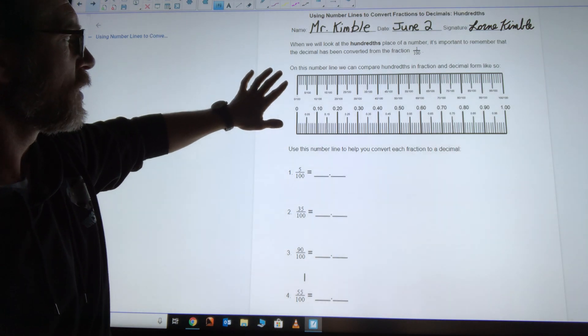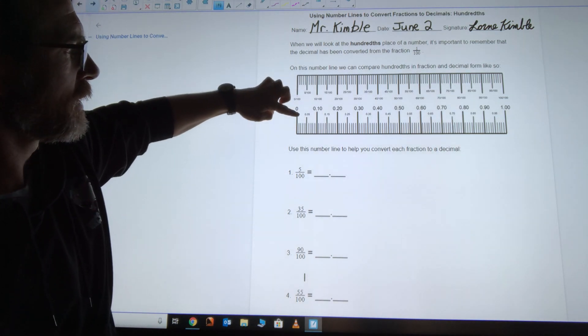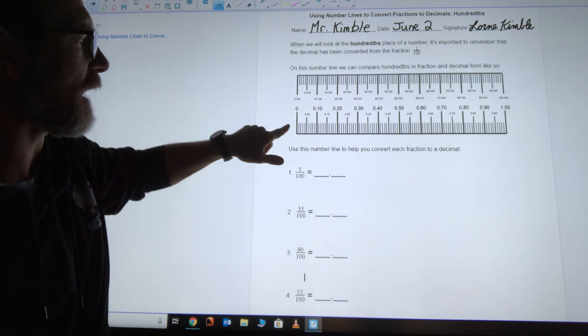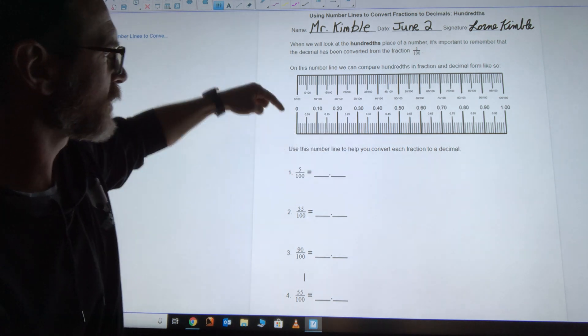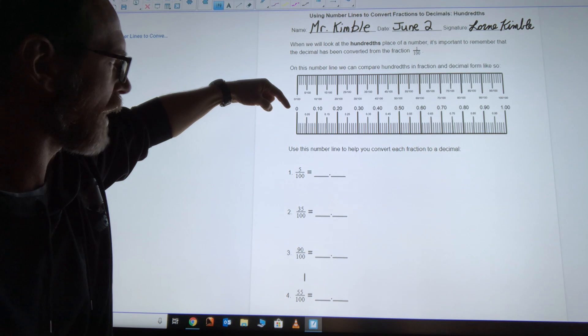If we look at this number line, you can see that I've given you the decimals all the way to the hundreds place, and I didn't have room to put every single decimal in, so I've only done every fifth hundredth.